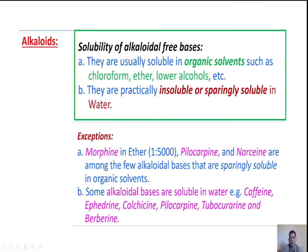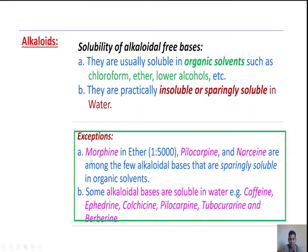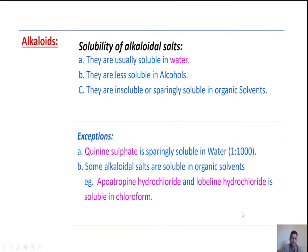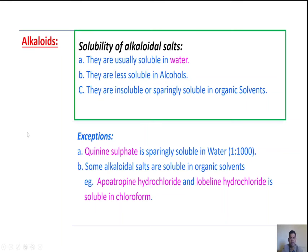Next, solubility of alkaloids. First, solubility of alkaloidal free bases. They are usually soluble in organic solvents such as chloroform, ether, lower alcohols, etc. They are practically insoluble or sparingly soluble in water. Exceptions: morphine is an alkaloidal free base soluble in ether in the ratio of 1 in 5000. Pilocarpine and noscapine are sparingly soluble in organic solvents. Some alkaloidal bases soluble in water include caffeine, ephedrine, colchicine, pilocarpine, d-tubocurarine, and berberine.